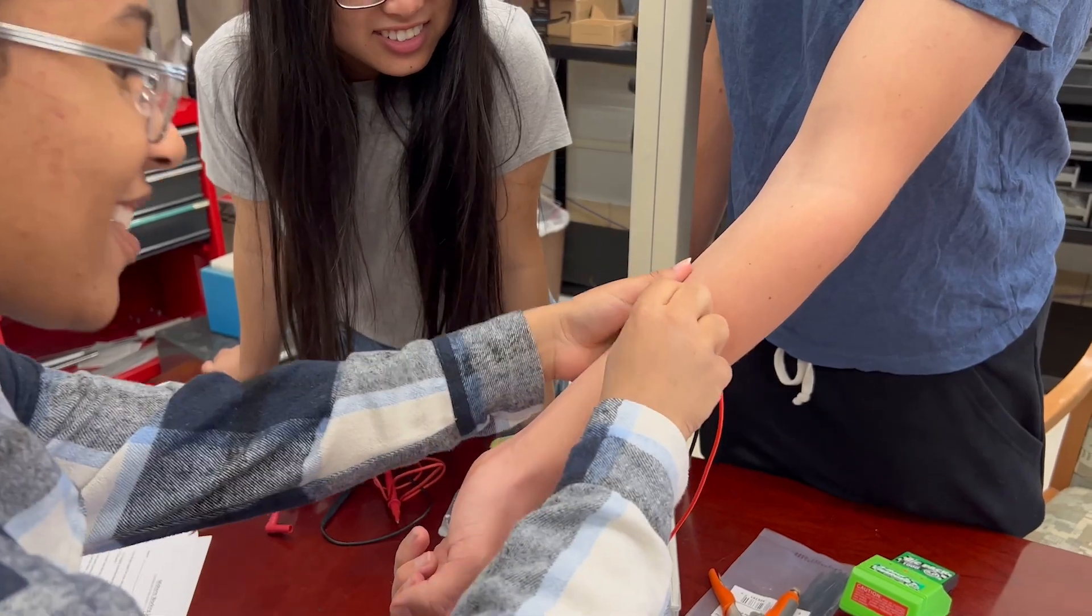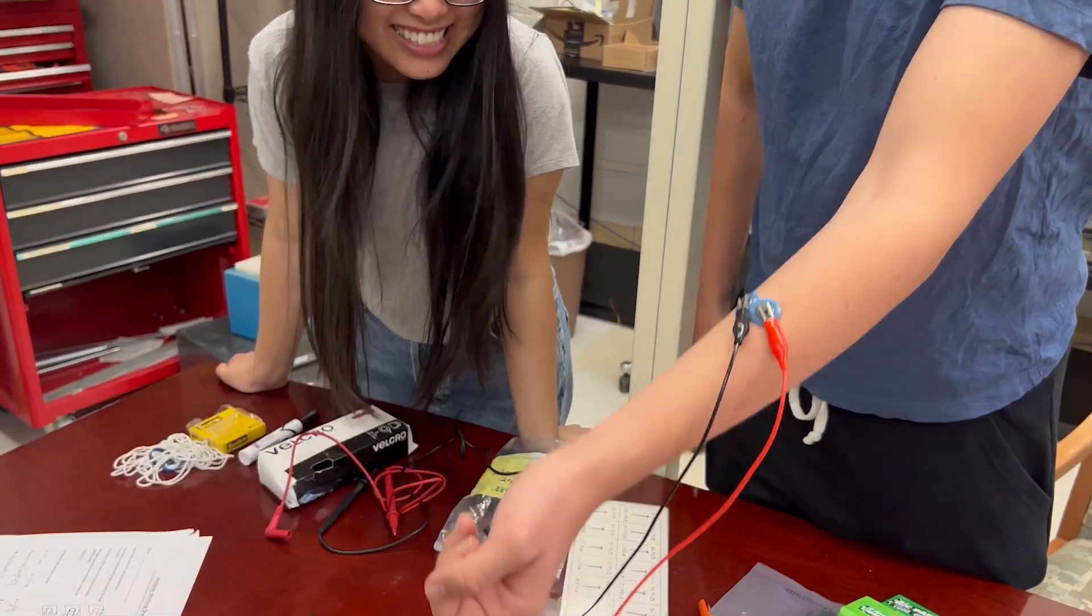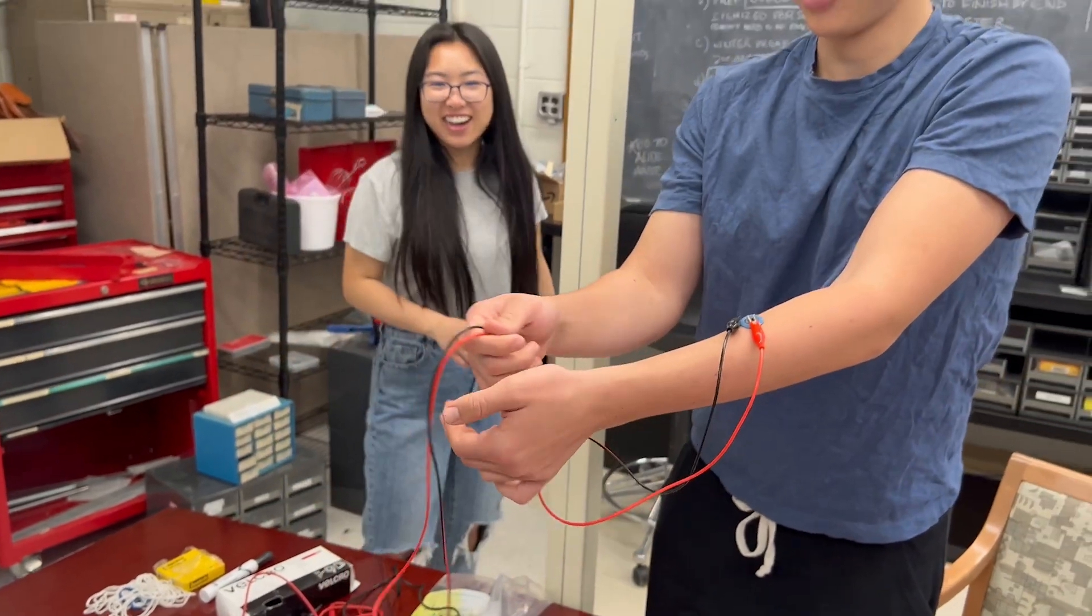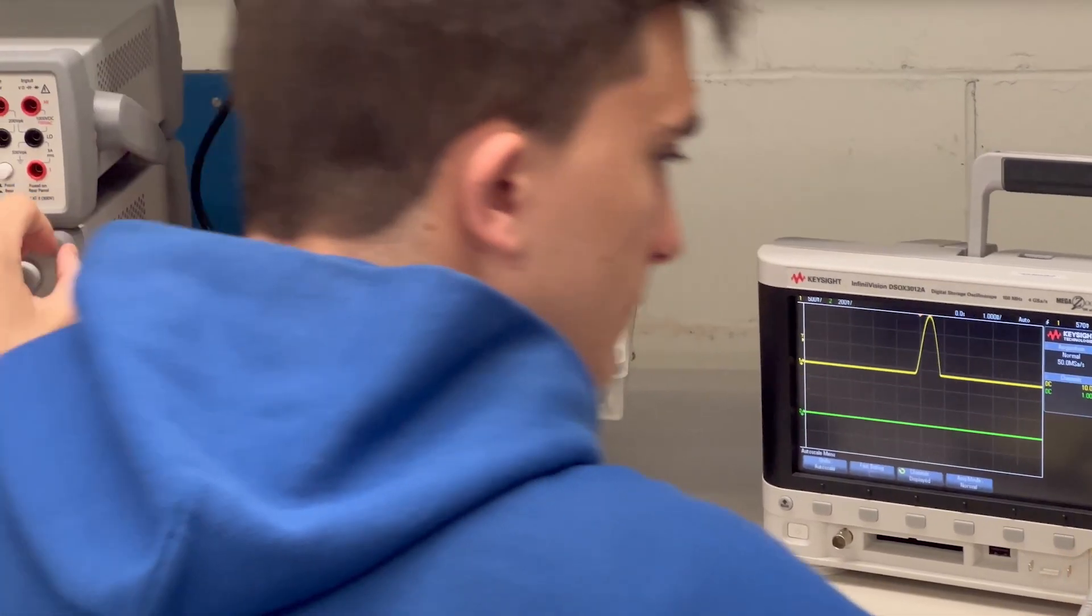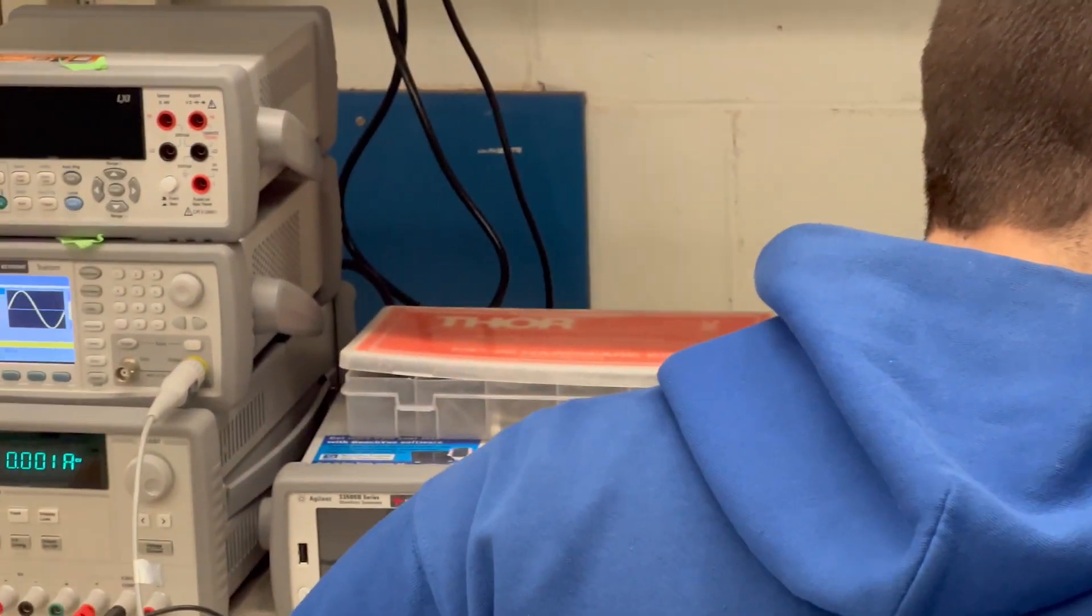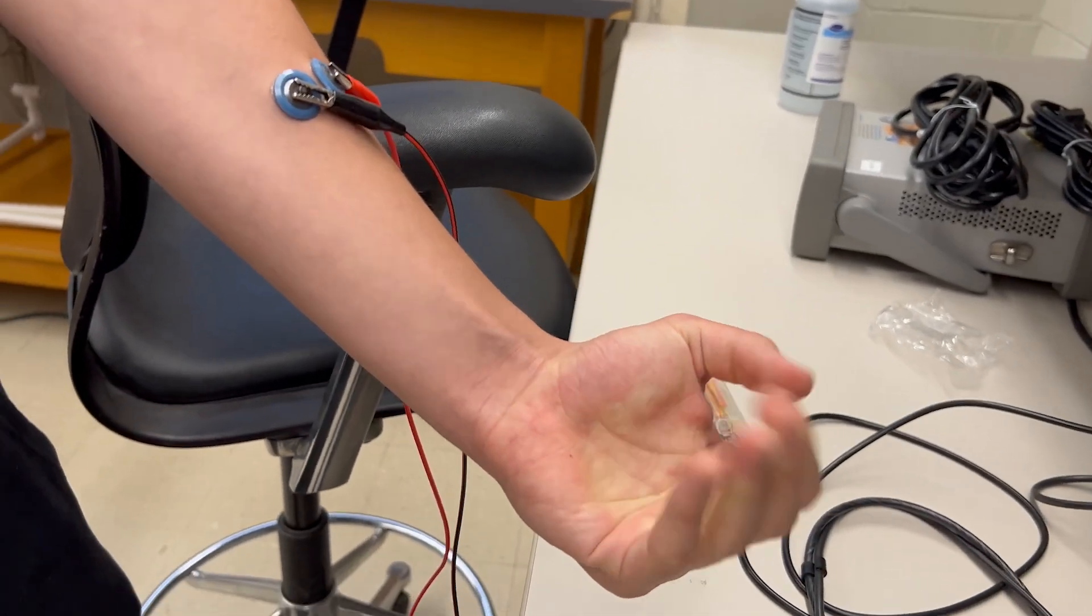Electromyography is a sensing technique where you can strap electrodes to your arm and these electrodes measure voltages inside of your muscles. If someone is an amputee we'd be able to pull out muscle signals from their muscles, figure out what their nerves are telling their muscles to do and do that same action with the prosthetic.